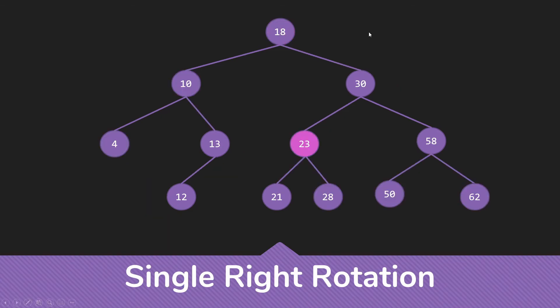So we see that we rotated the 18 to the top. Its left child stayed the same. 30's right child stayed the same. But we moved the 23 from the right child of 18 to the left child of 30.